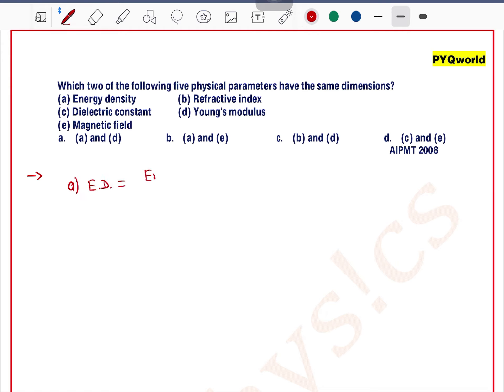Option A: Energy density. The formula for energy density is energy per unit volume. Energy has a dimension and volume also has a dimension. Option B: Refractive index. What is refractive index? It is a ratio of two similar quantities, mu 1 by mu 2.